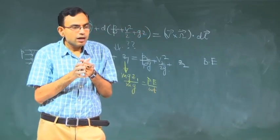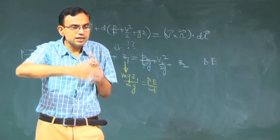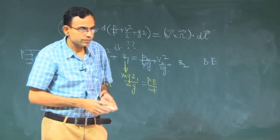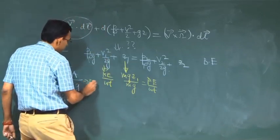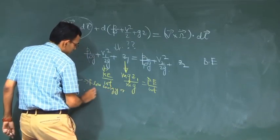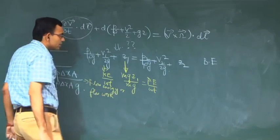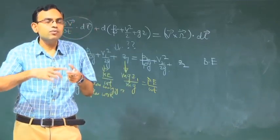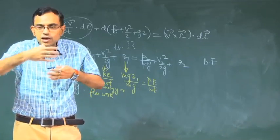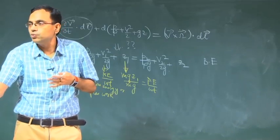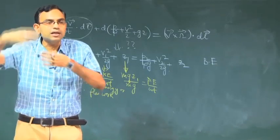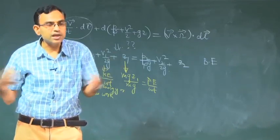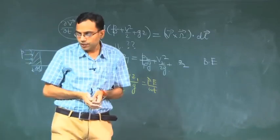This is called flow energy or flow work — the additional energy the system must have to maintain the flow in the presence of pressure. This is the difference between a stagnant system and a flowing system. In a flow, the sum total of kinetic energy, potential energy, and flow energy transferred between one point and another remains conserved — not possessed. Because there is a continuous flow process, this energy is not possessed by the fluid but is instantaneously transferred from one point to the next.